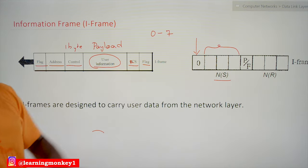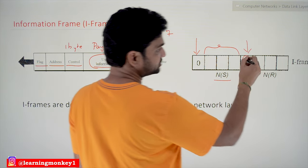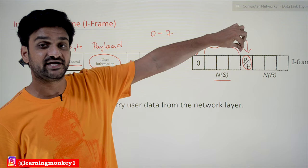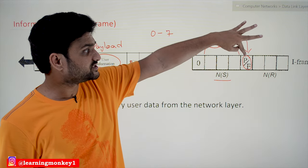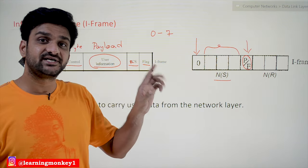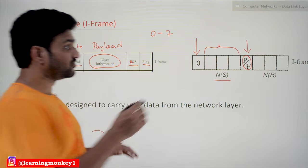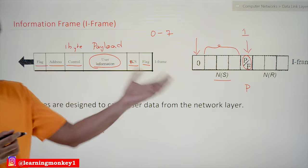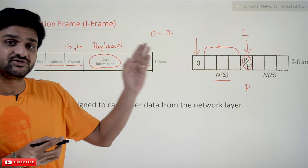The next bit is P/F — Poll or Final. Whenever this bit is set to one, the use of Poll or Final is indicated. If it is set to zero, it is of no use. Poll is used whenever the primary system is transmitting data. What the primary and secondary systems are was discussed in normal response mode — in that mode, one system continuously sends data frames and the other gives responses.